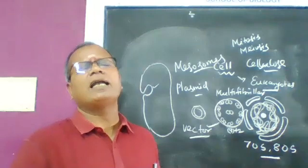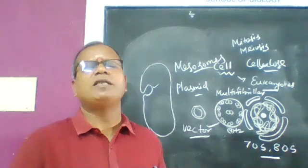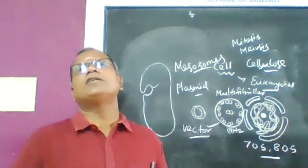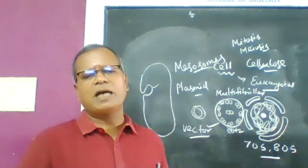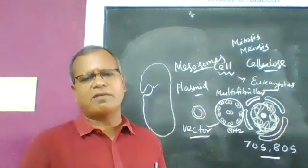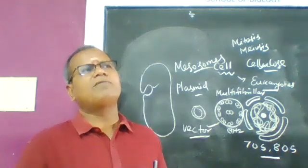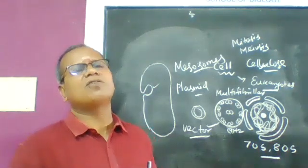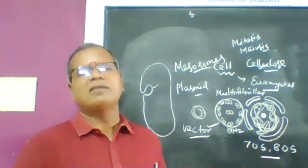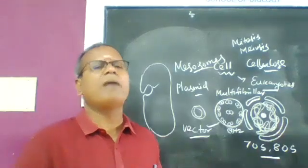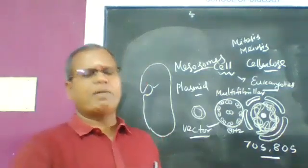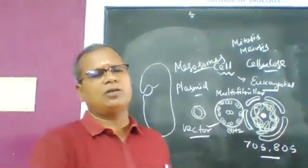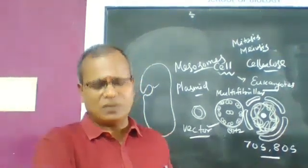Bacteria and cyanobacteria — the blue-green algae — are prokaryotic organisms. Cyanobacteria play a vital role in atmospheric nitrogen fixation. Examples include Nostoc, Anabaena, Oscillatoria, and Lyngbya. They act as bio-fertilizers, meaning fertilizers of biological origin.